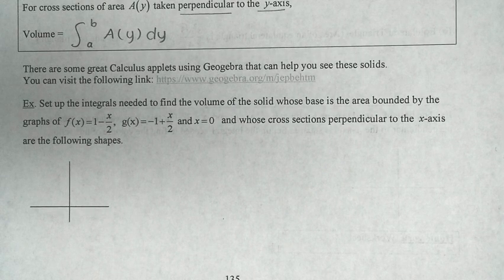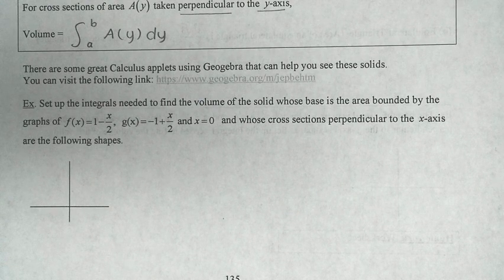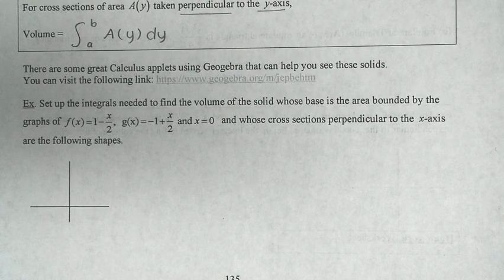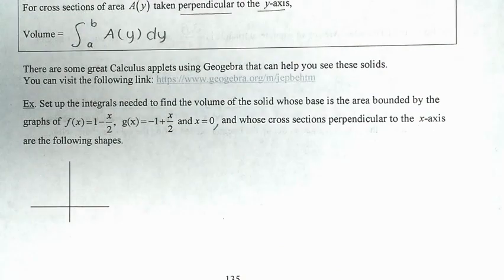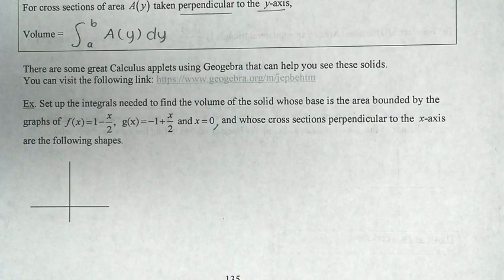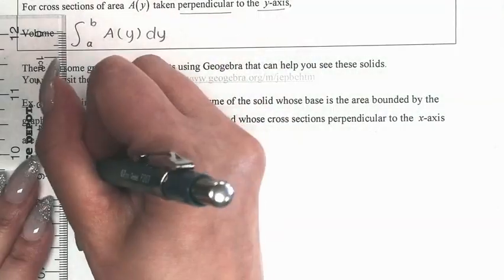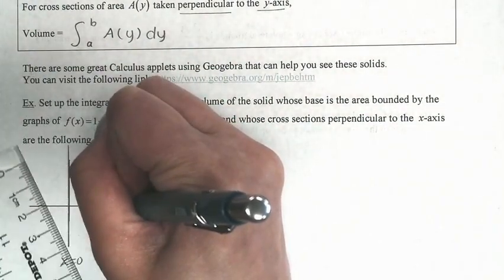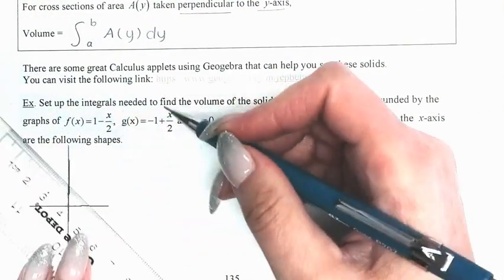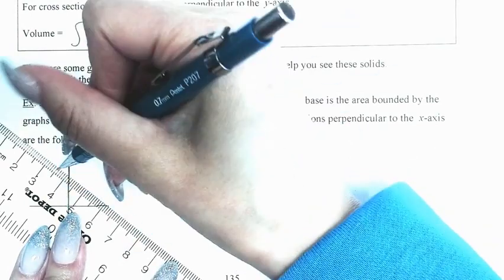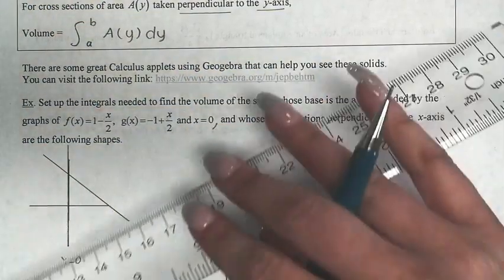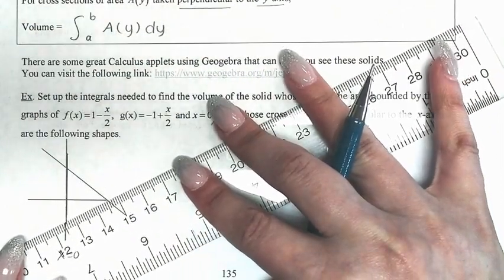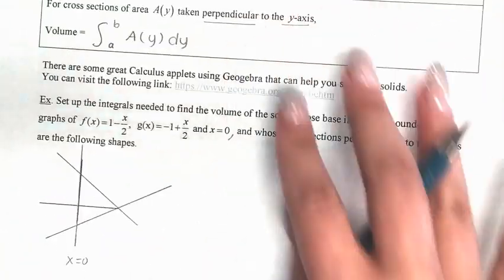For the first example, you need to set up the integrals needed to find the volume of the solid whose base is the area bounded by the graphs f(x) = 1 − x/2, g(x) = −1 + x/2, and x = 0. Let's graph those. We know x = 0 is here, and 1 − x/2 is a decreasing function that looks something like this.